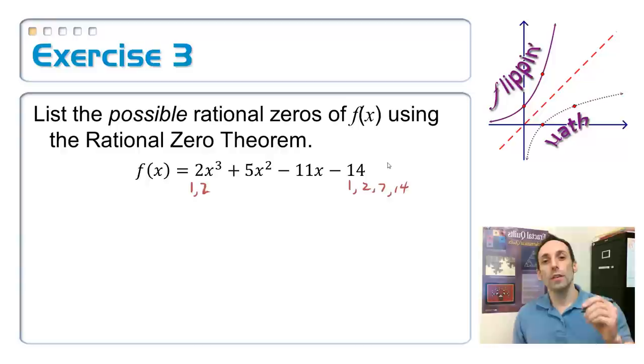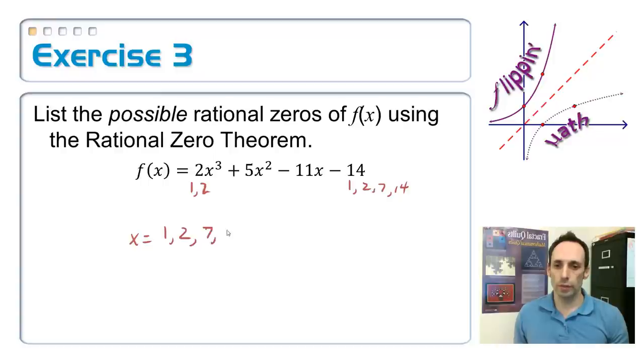So x could be equal to 1, 2, 7, and 14. That's plus or minus out front if I divide them all by 1. And then if I divide them all by 2: 1 half, 2 halves same thing as 1, 7 halves, 14 halves same thing as 2.